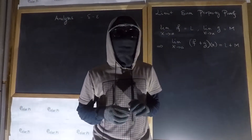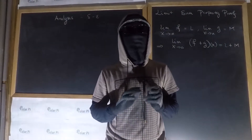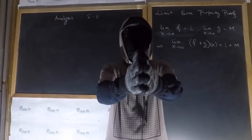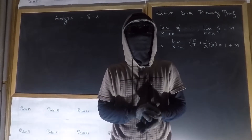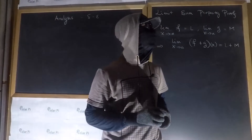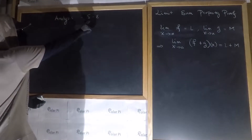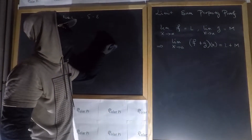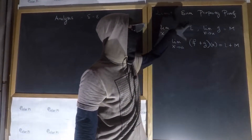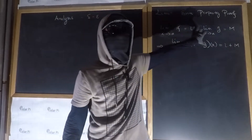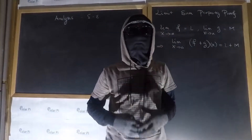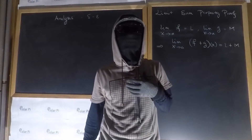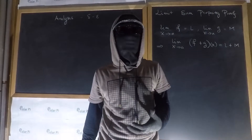Hey guys, welcome. First and foremost, may the Lord Jesus Christ bless this video and bless you and I. What we're going to do here is use the delta-epsilon limit definition to prove the limit sum property, which is stated here. In videos to come, I will do similar proofs — for example, the limit product property.